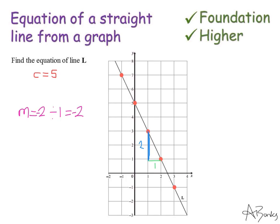You just need to be careful of that step there. So now I can form the equation of my line. I've got y equals, my gradient is minus 2, x and my y-intercept is 5. So plus 5.